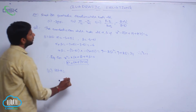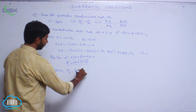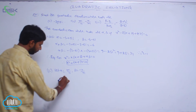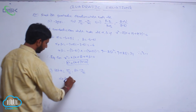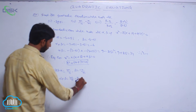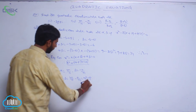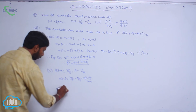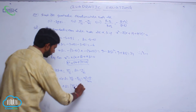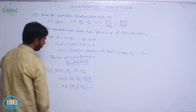For the second one, let alpha = m/n and beta = minus n/m. Then alpha plus beta = m/n minus n/m = (m squared minus n squared) / mn. And the product of roots alpha·beta = (m/n)(minus n/m) = minus 1.